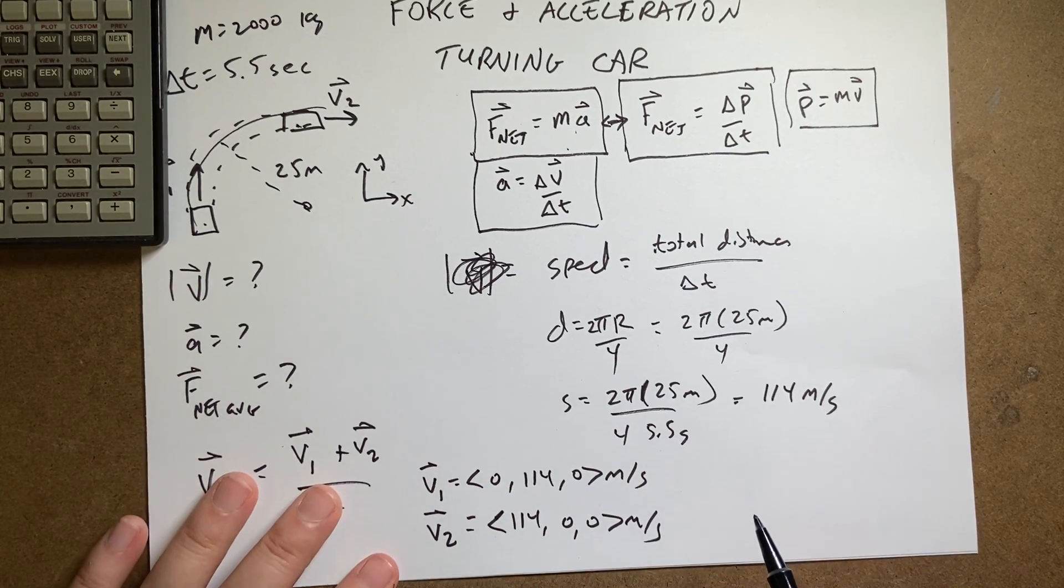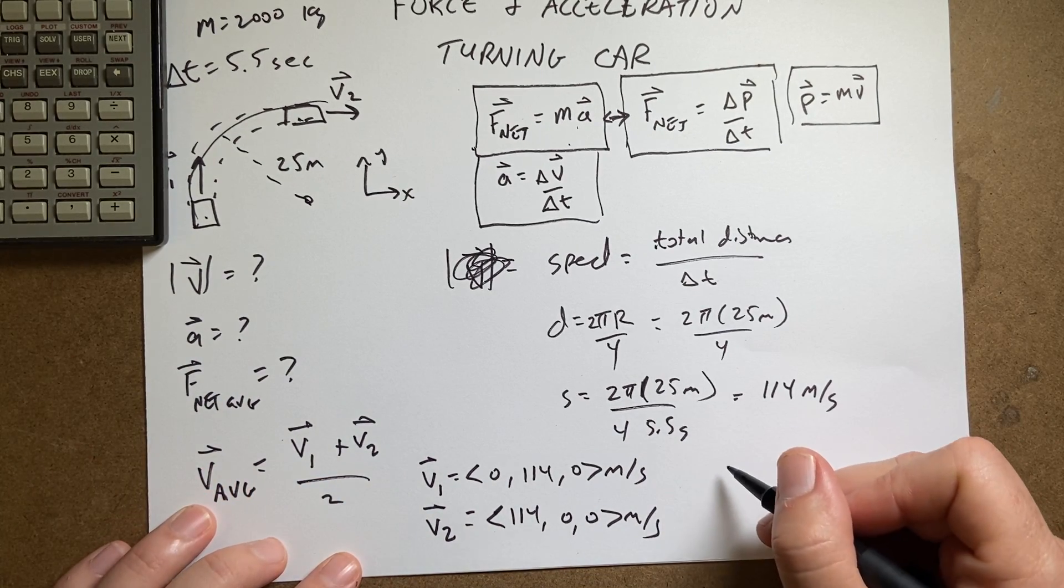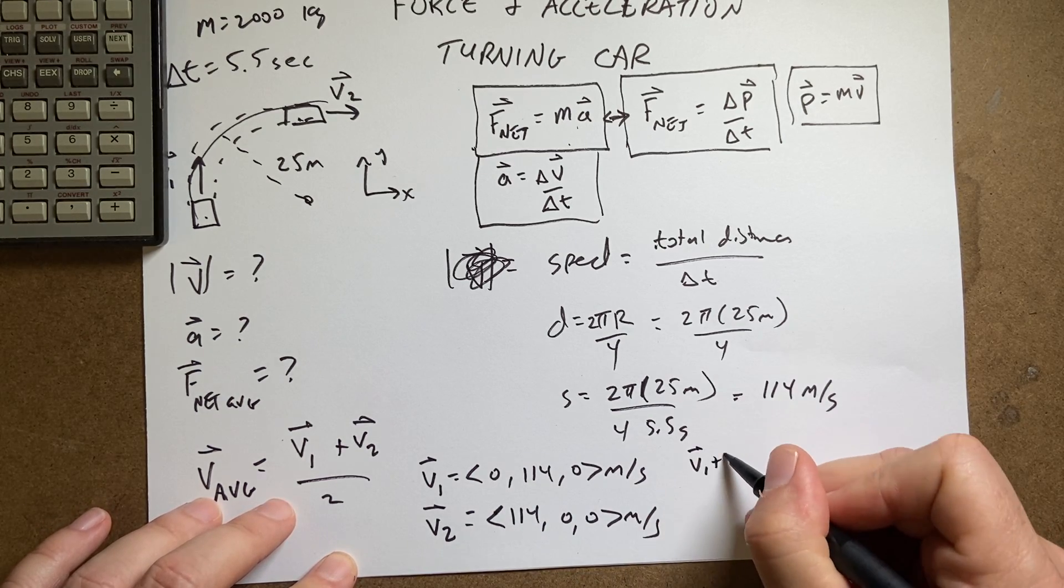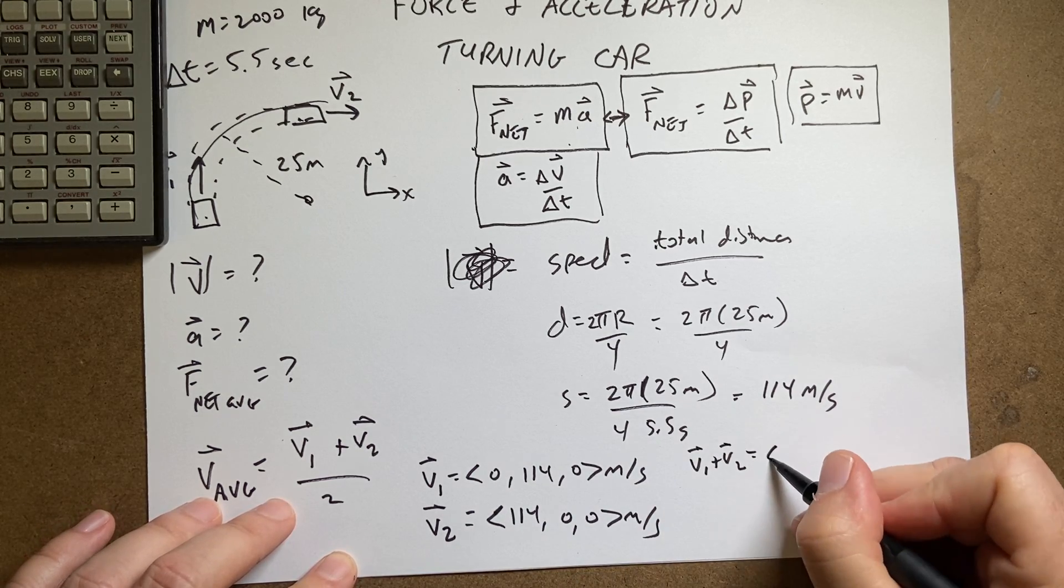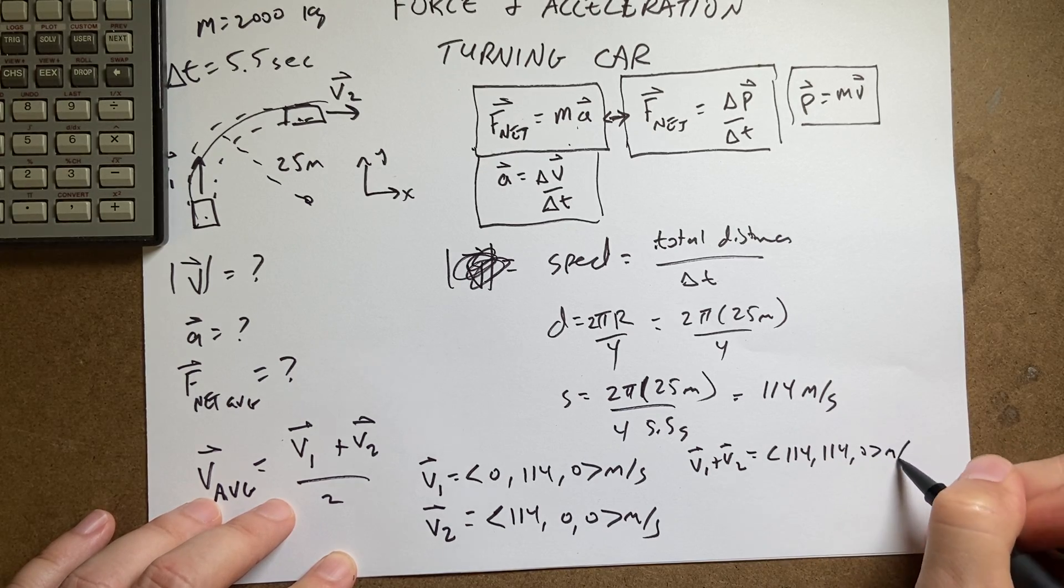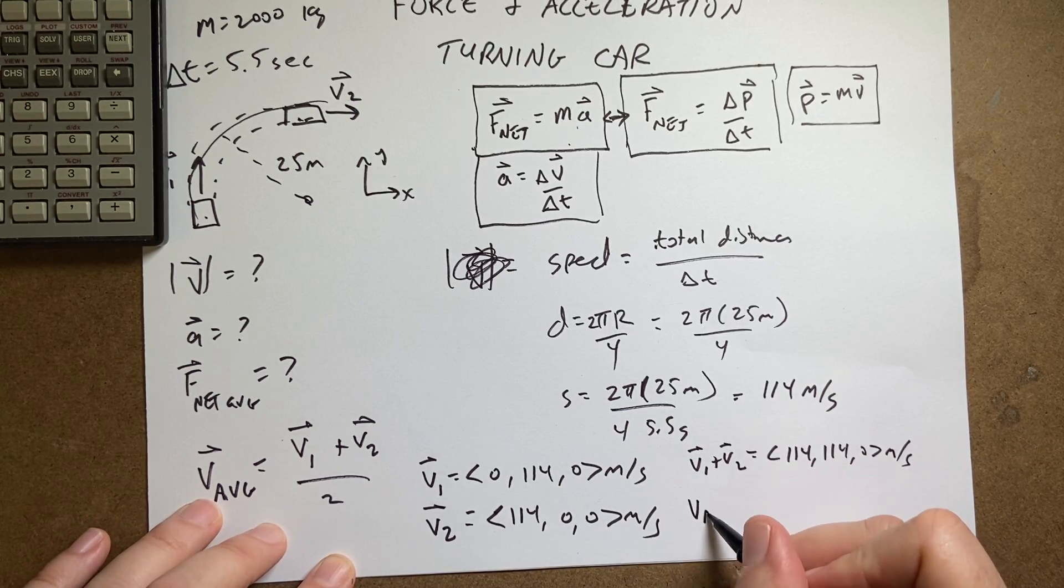So if I add these two vectors together, I get 114, so V1 plus V2 equals 114, 114, 0 meters per second. And then if I get the average, V average, it's just going to be that divided by 2.